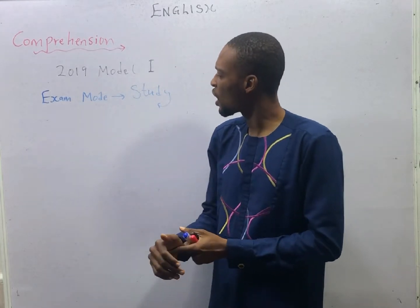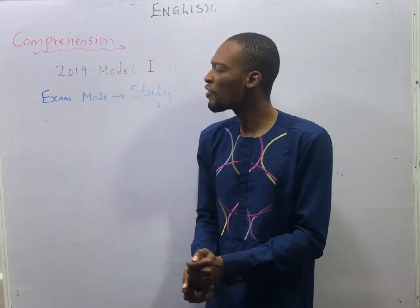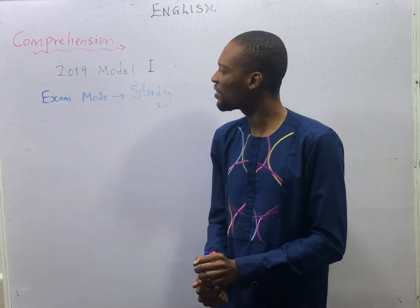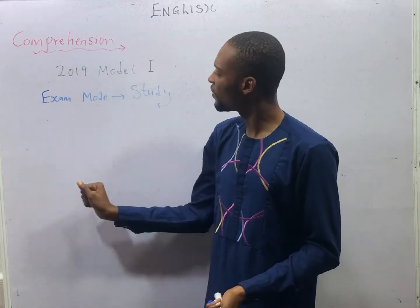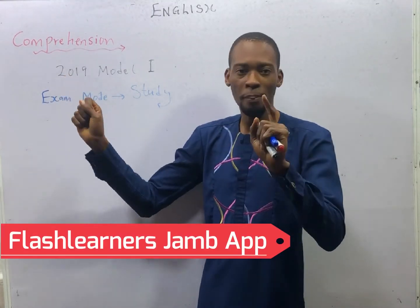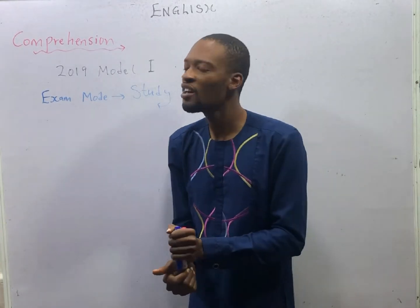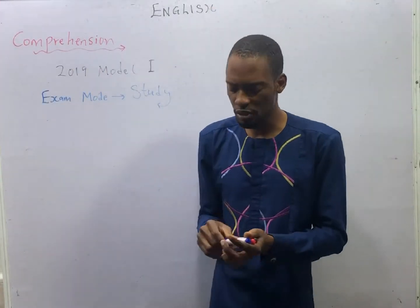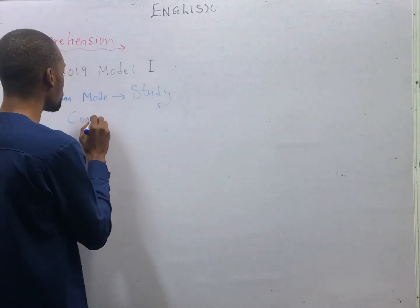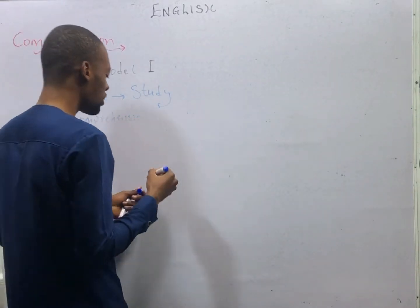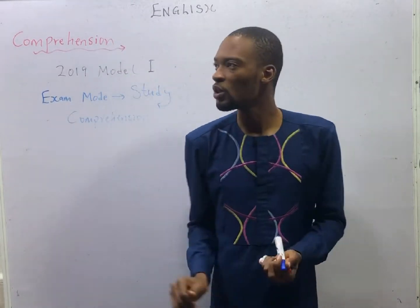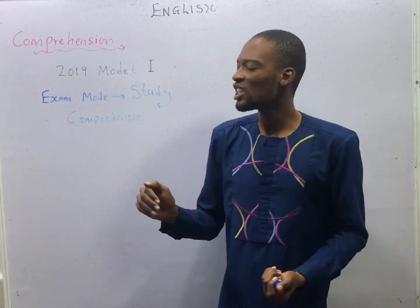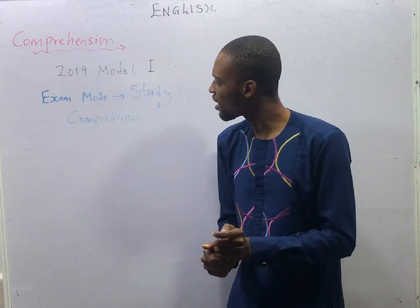I will display the questions on the screen, but for the passage, I won't. As you are reading the passage, you will be able to pick the answers. To get the best experience, after the class or during the class, you can open your Flash Learners Jam application. Click on Practice for UTME, go to Use of English, choose 2019 model 1, choose Comprehension. Because there are different topics in English, so choose topic Comprehension and you will see the passage. Under study mode, you will see a small i at the bottom of the screen. Anytime you click on the i, it will give you the correct answer and the explanation. This applies to every other subject.